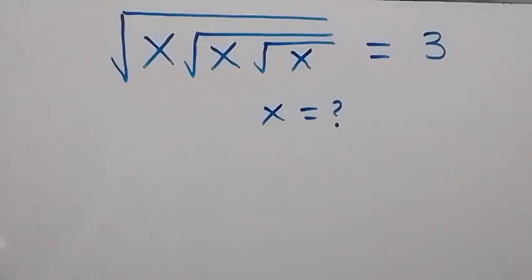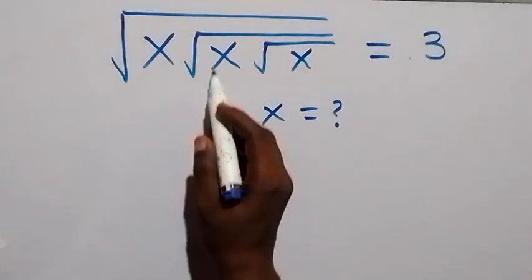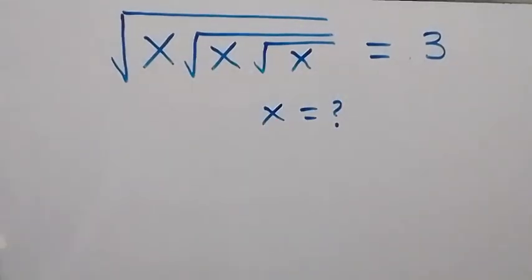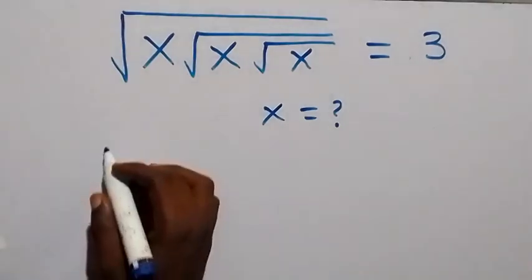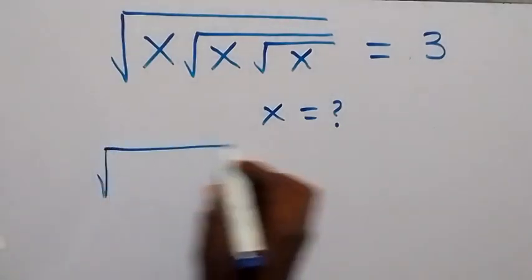Hello, you are welcome to solve this nice math problem in golden roots. We have the square root of x times the square root of x times the square root of x, all equal to 3. We can take the square on both sides.